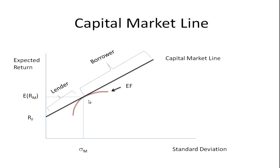The capital market line assumes that everybody has the same expectations, so the efficient frontier is the same for everyone. The tangency point — point M — is the market portfolio. This is the case where you put all of your assets in the market portfolio. A less aggressive investor might choose to lend some money, buying bonds or treasury bills, and would be positioned somewhere between the risk-free rate and point M — for example, putting half their money in riskless assets and half in the risky portfolio.